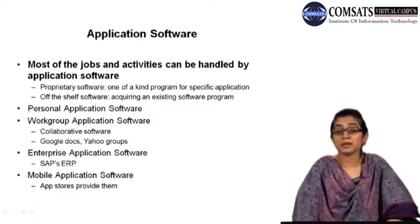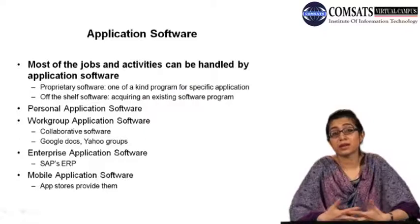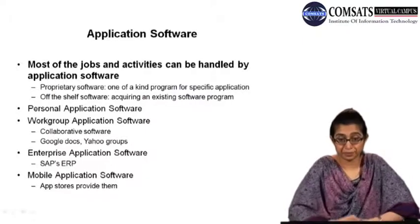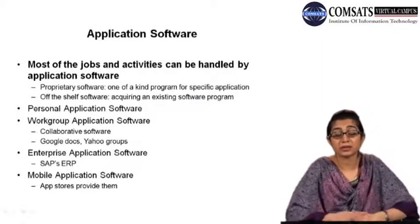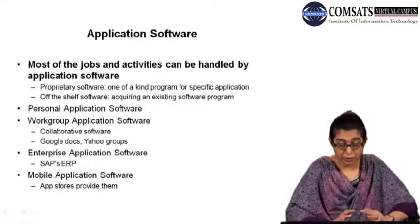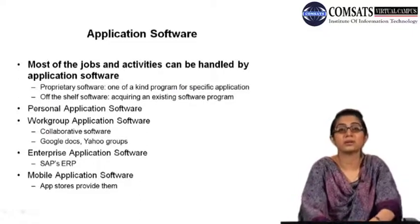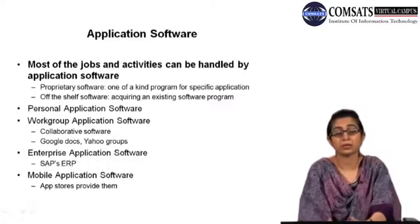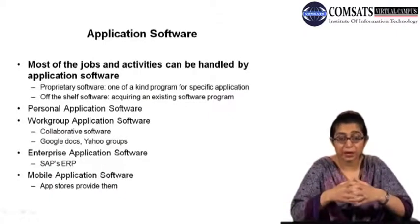These are simple special software performing additional tasks for either the workgroup environment — with the servers used — or the mainframes being used at the enterprise sphere of influence. Now for application software: when we were talking about system software, we said it is based on the three spheres of influence — personal, workgroup, and enterprise. The same is the case with application software. Most of the jobs and activities in an organization can be handled by the application software.